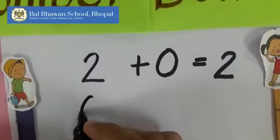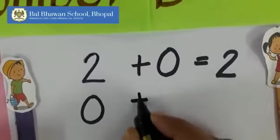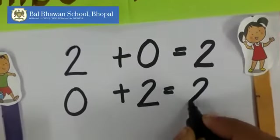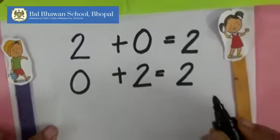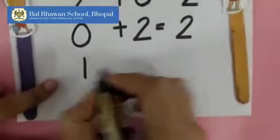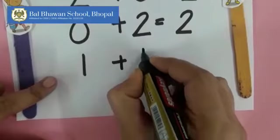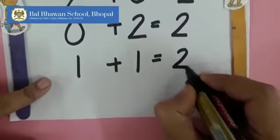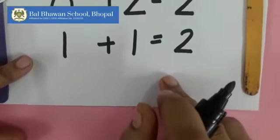And then Rohan can take zero, Rhea will get two. How many in all? Two. And there is one more way to divide two amongst them. Both of them can take one one. So again, total how many we have? Two. This is the number bond for number two.